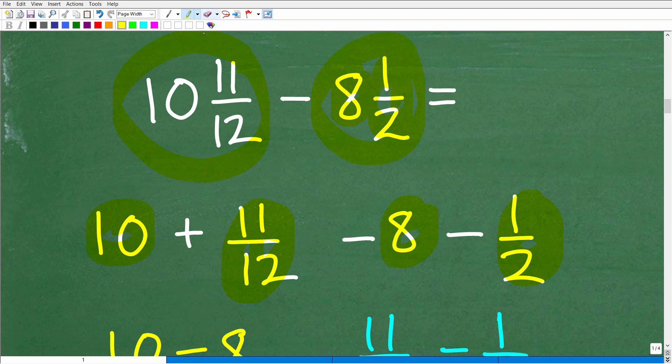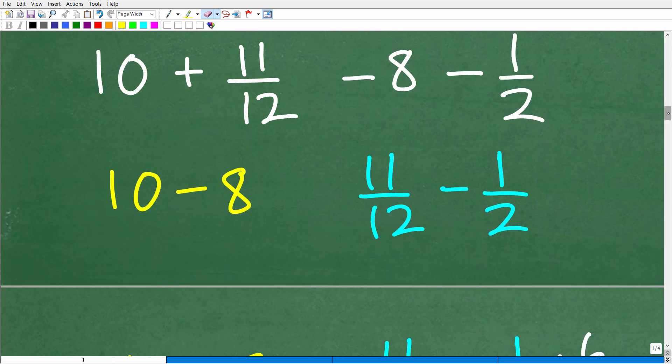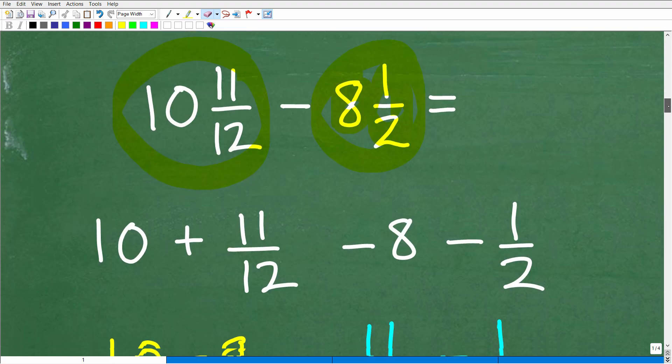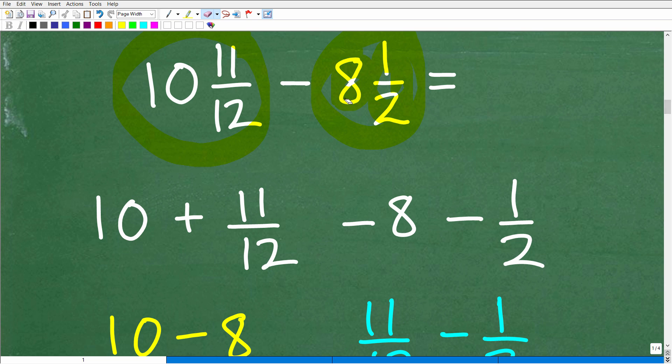So if you look at the problem this way you can kind of shuffle these numbers around and make this problem much easier. So again let me kind of go back up here. So we're going to think of 10 and 11 twelfths, that's 10 plus 11 twelfths. And we're going to take away 8 and another 1 half. So our total of 8 and 1 half.